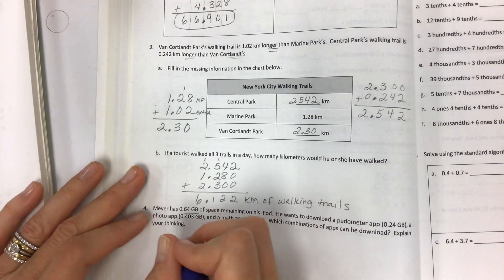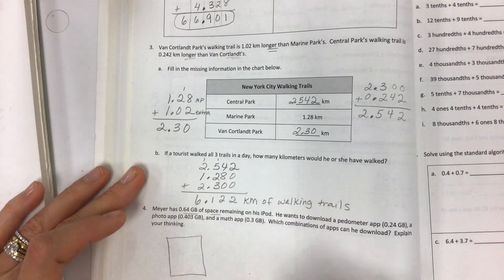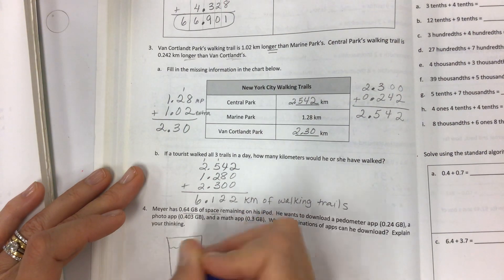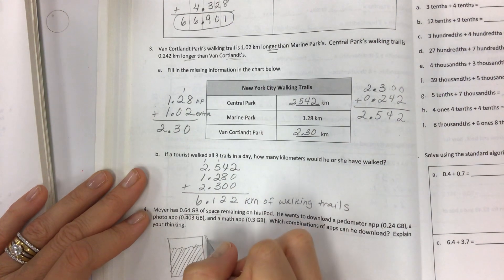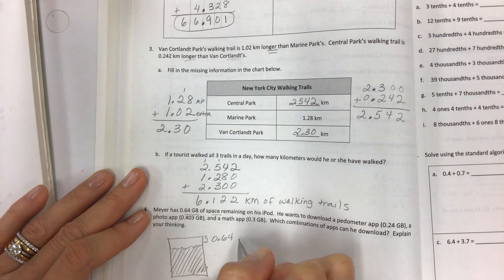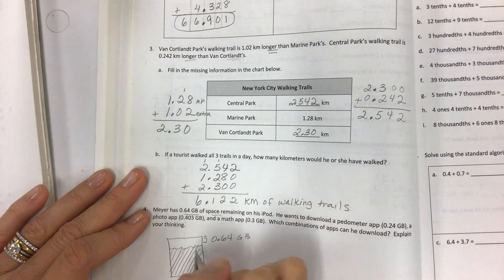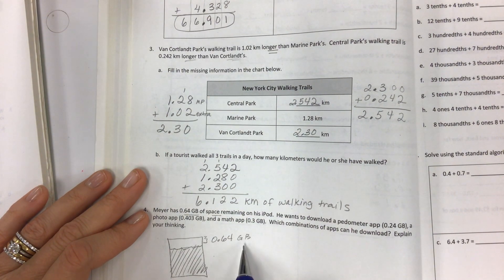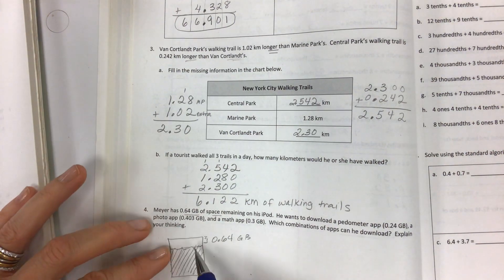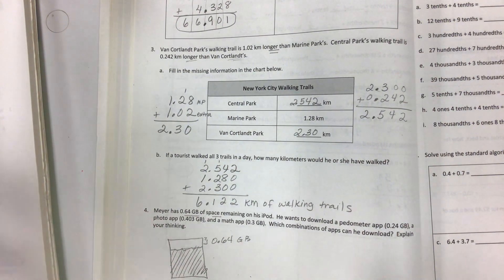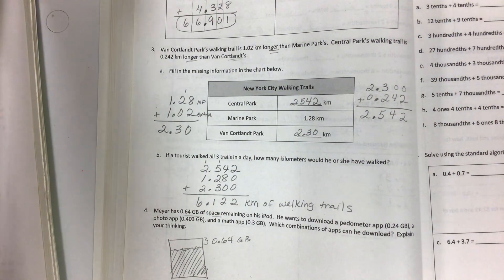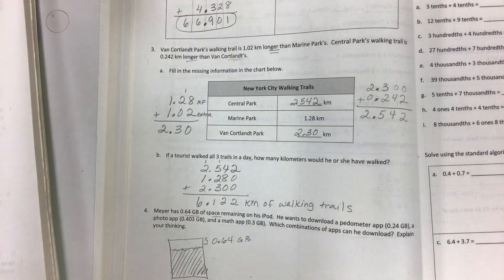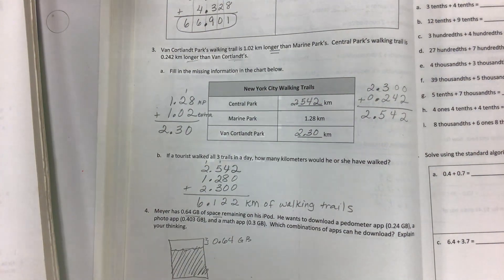We're going to talk about it in class. Think about this device with all of this space that's taken up, and he only has this much to work with. If your total goes over that, then Meyer is not going to be able to use that combination of apps. We'll talk about it more after you finish the call. Hopefully you guys will understand this. It'll be the easiest lesson of the year. All right, see you soon.